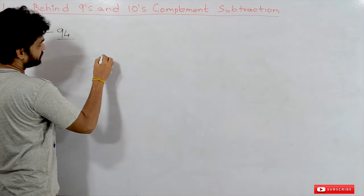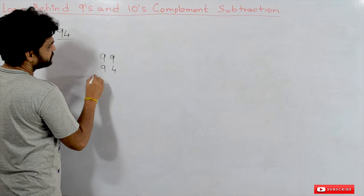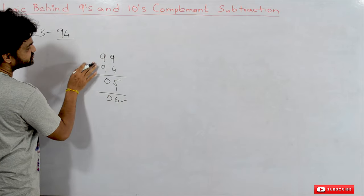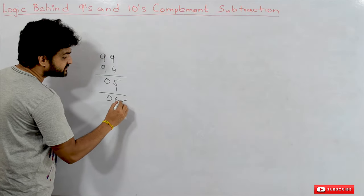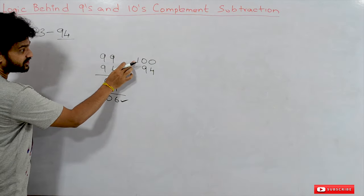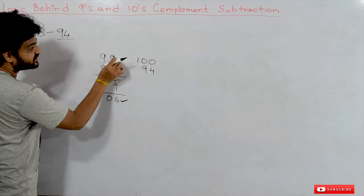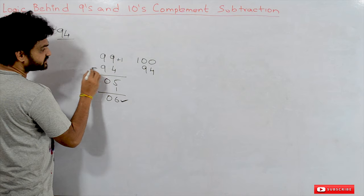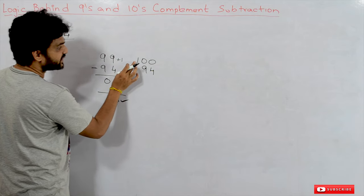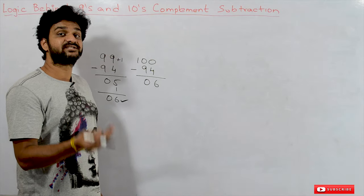The first step is to find the 10s complement of the subtrahend, which is 94. The 9s complement of 94 is 05, and adding 1 gives 06. So the 10s complement of 94 is 6. How was this 6 obtained? It is 100 minus 94 — because we subtracted 94 from 99 and added 1, making 99 plus 1 equal to 100. So 6 has been obtained by 100 minus 94.